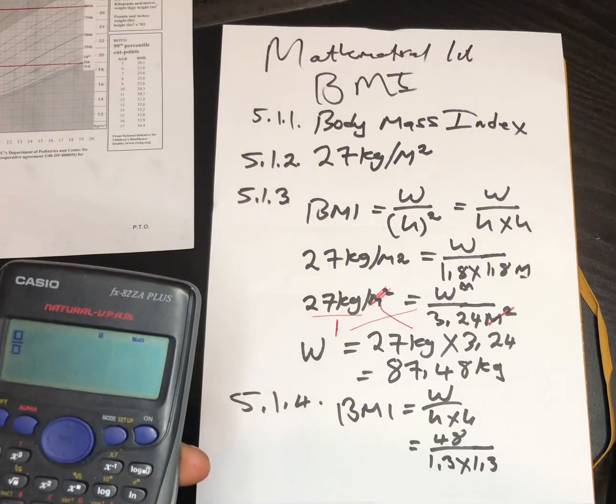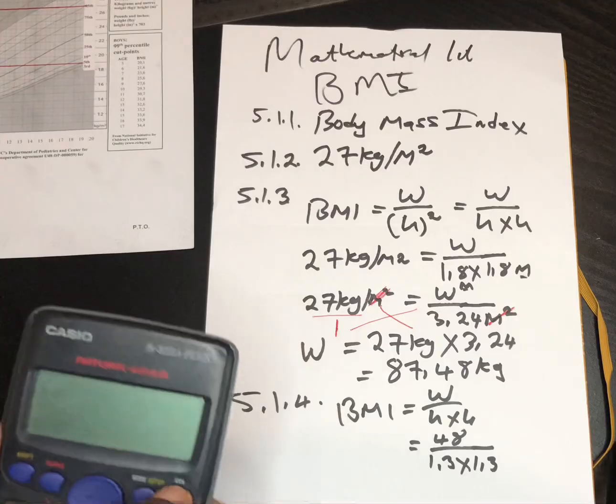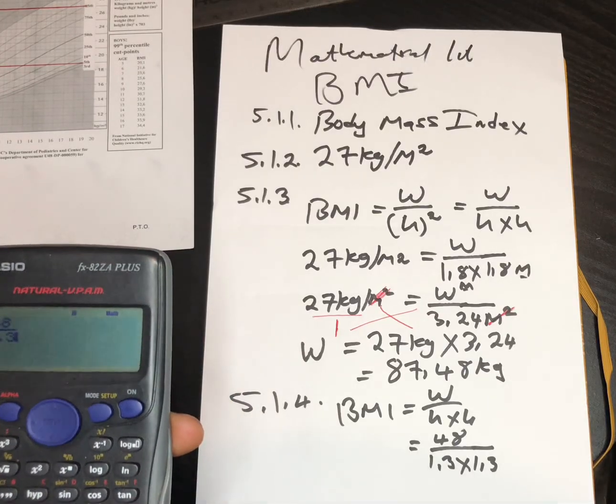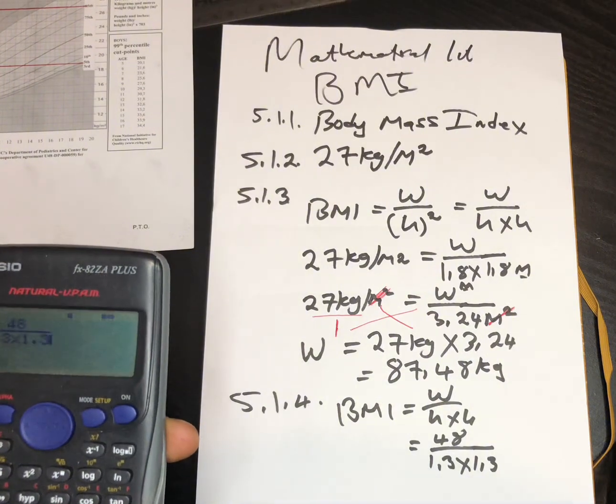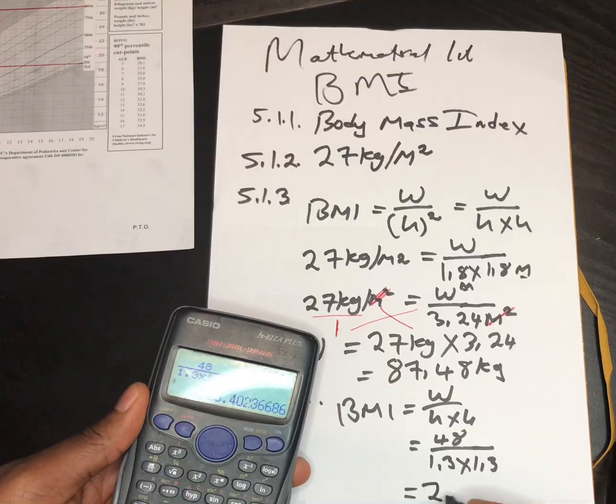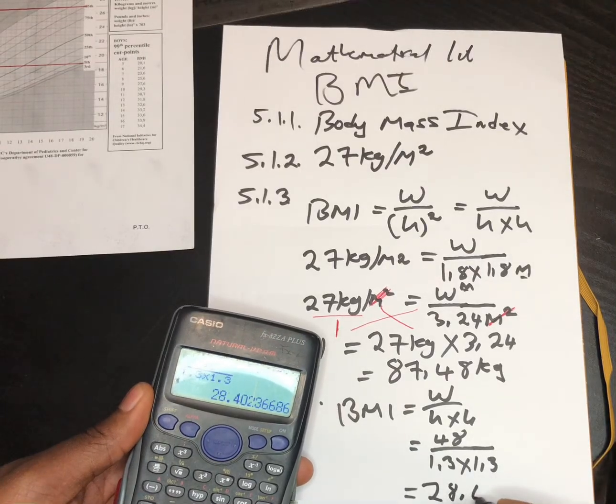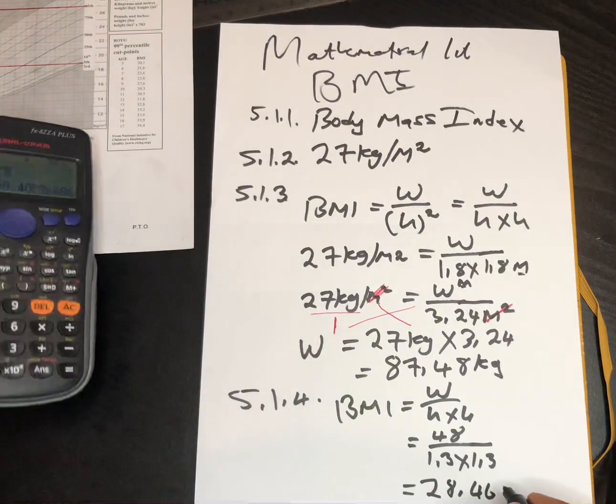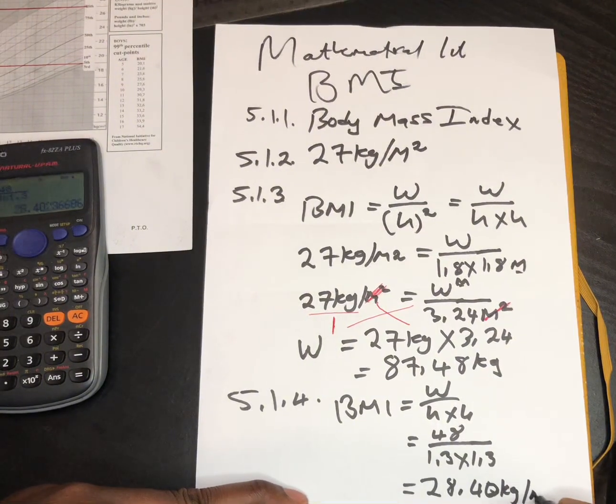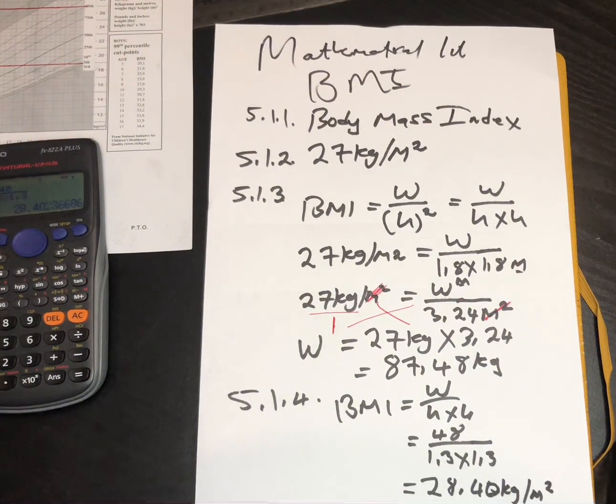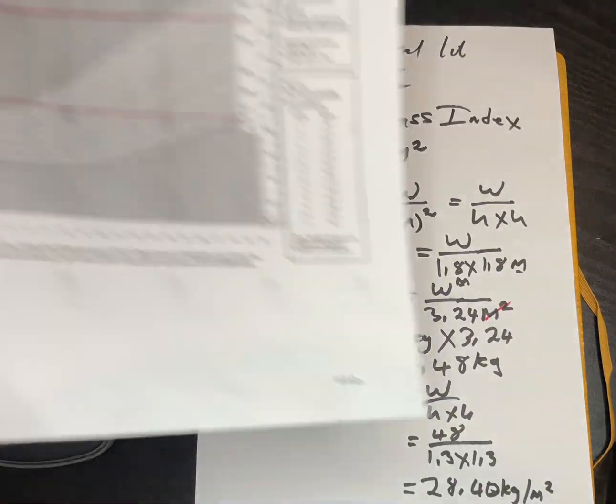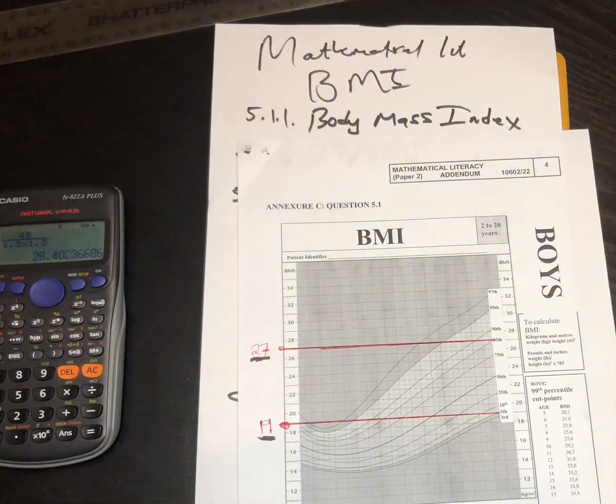Let's do the calculation. We have 48 over 1.3 multiplied by 1.3. Our answer here is 28.40 kg per meter squared. Let's go and check if he is telling the truth. Is he telling the truth? Let's check.